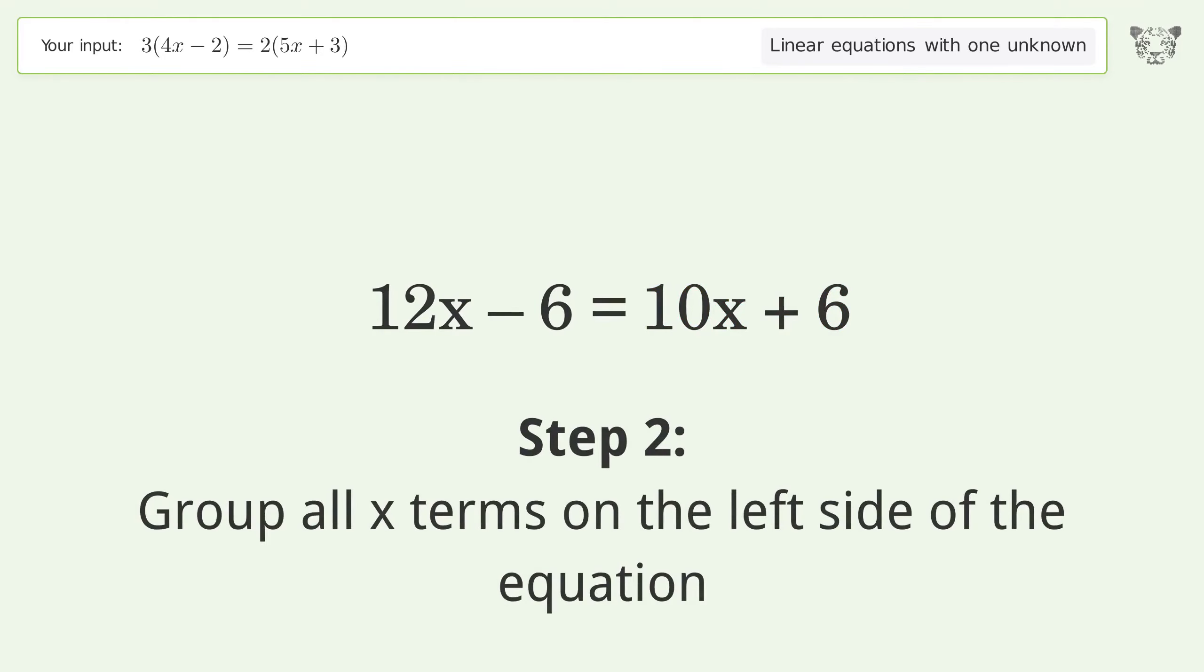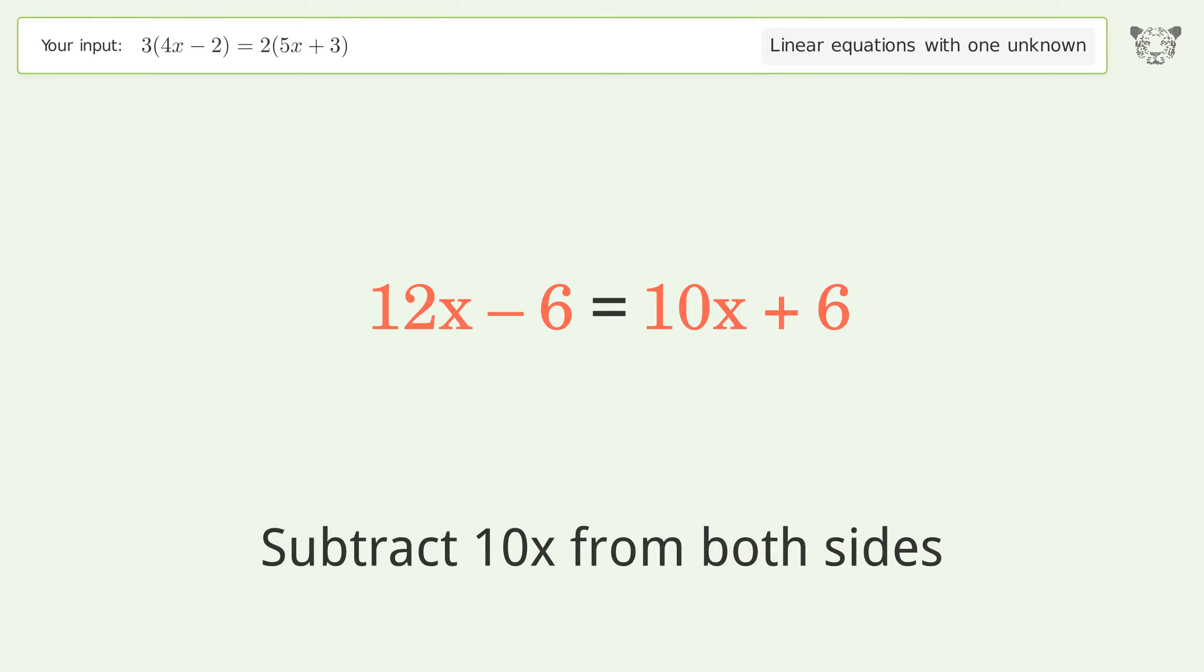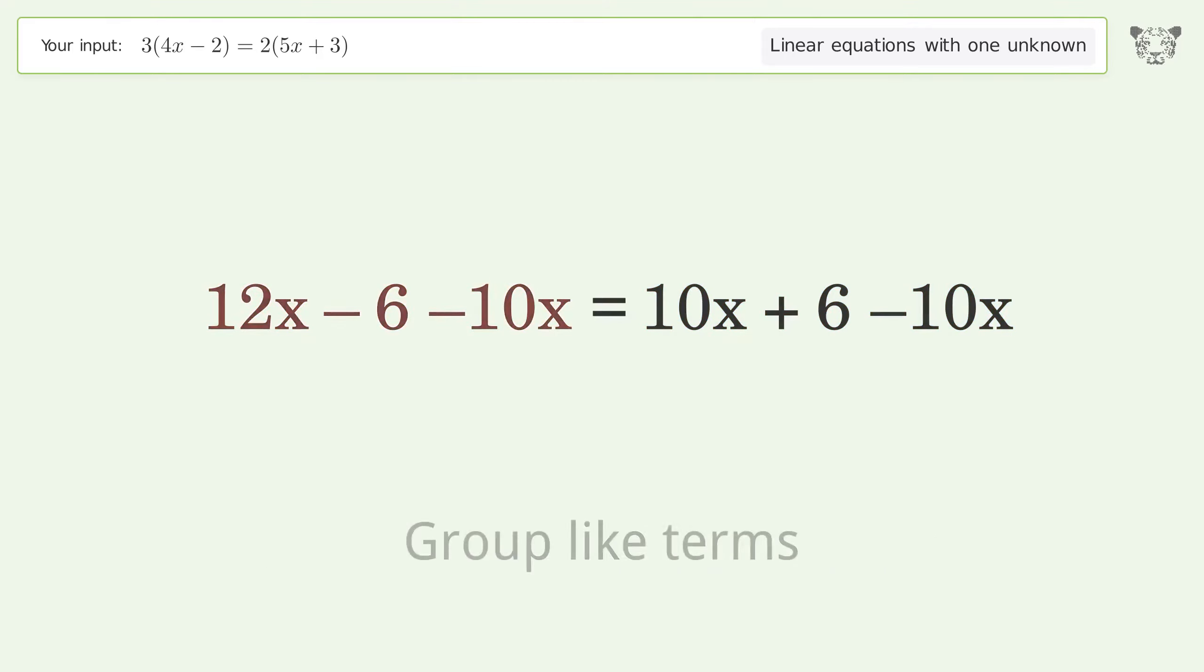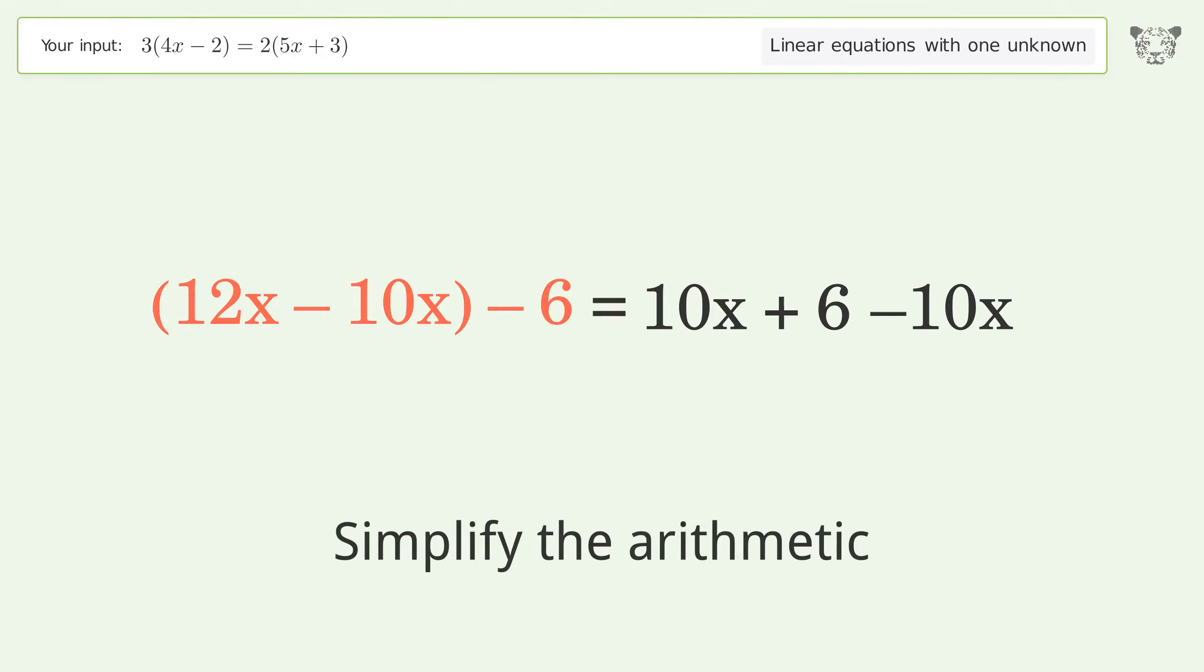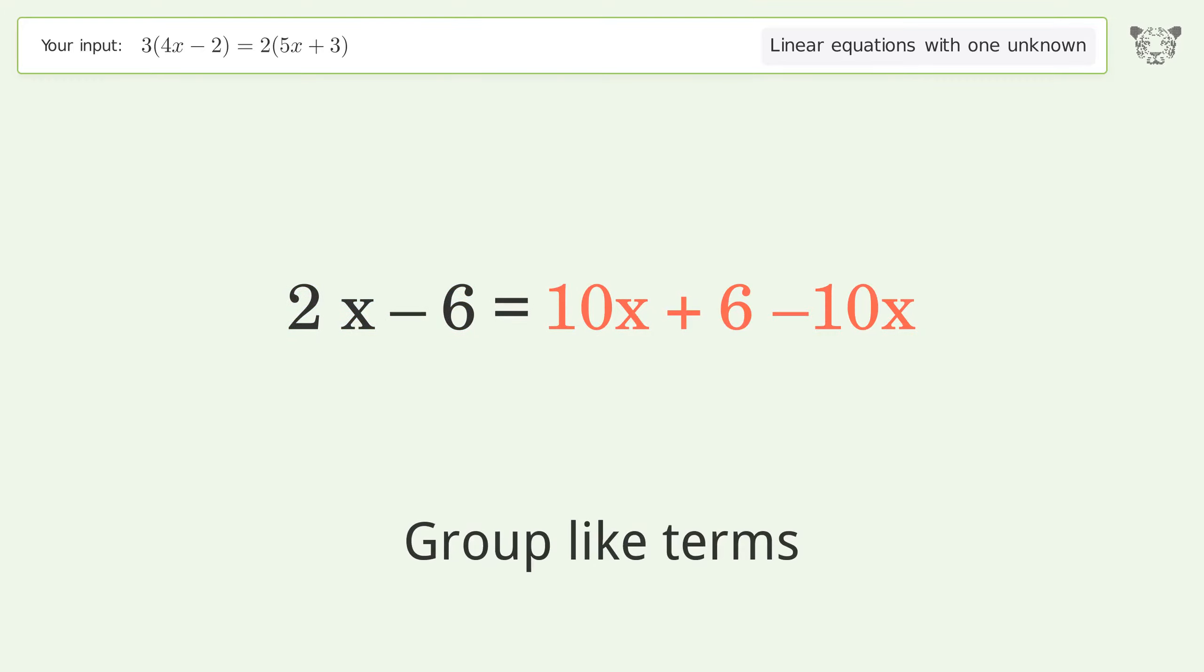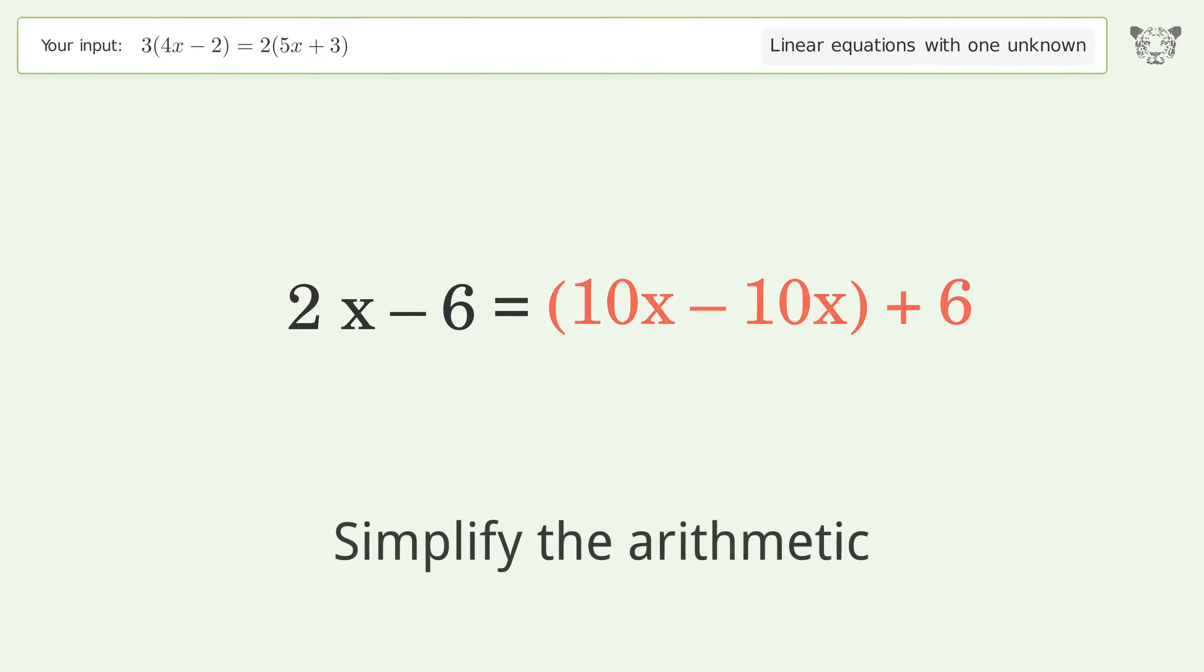Group all x terms on the left side of the equation by subtracting 10x from both sides. Group like terms and simplify the arithmetic.